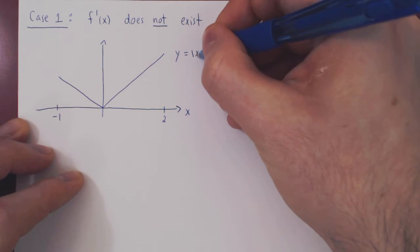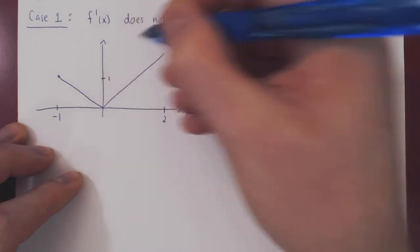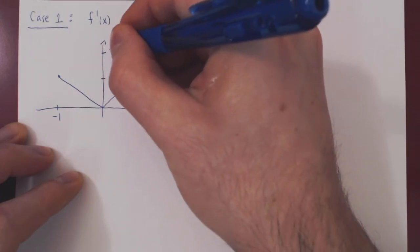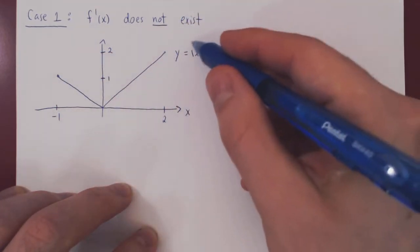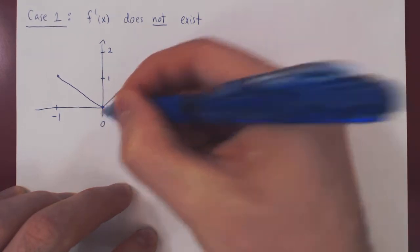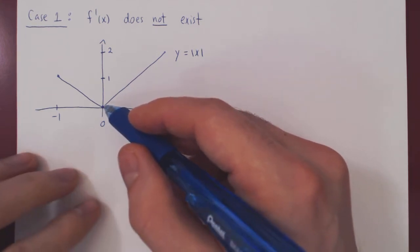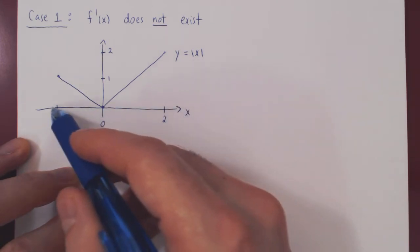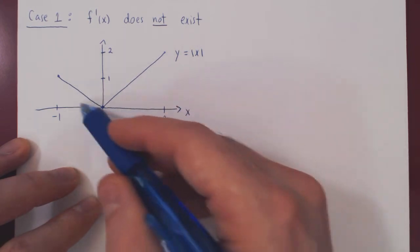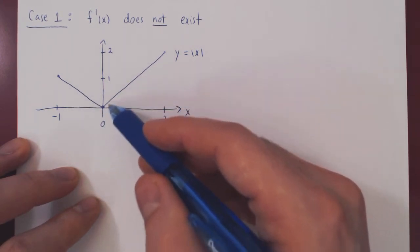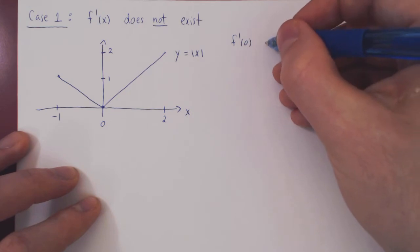Here's the graph: y is the absolute value of x. The y value at negative 1 is 1, and the y value at 2 is 2. The minimum value attained by the absolute value function is zero. This point is where the derivative is undefined — because of the cusp at x equals zero, there are an infinite number of possible tangent lines, so f prime of zero does not exist. The function is not differentiable at x equals zero.